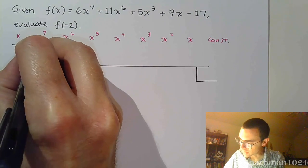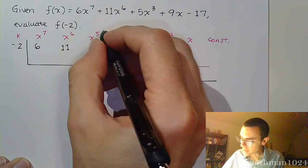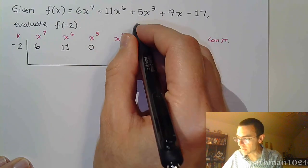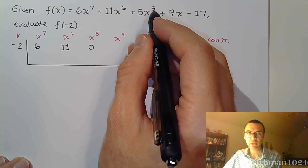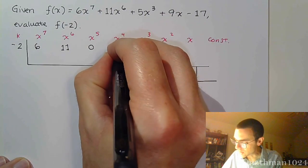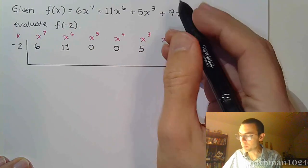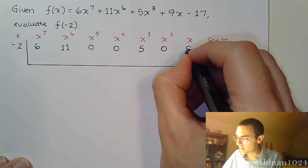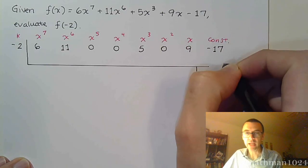I've got 6x to the 7, 11x to the 6. I don't have any x to the 5. I don't have any x to the 4 — see, it goes from degree 6 down to power 3 — so that's 0x to the 4, then 5x to the 3. I skip x squared, so that's another 0, then 9, and negative 17.